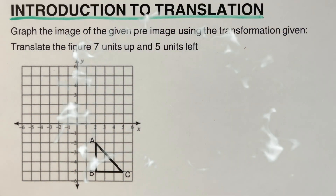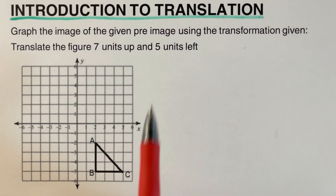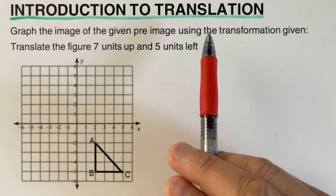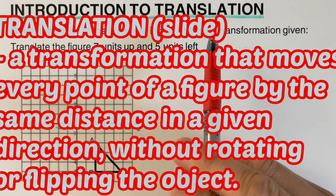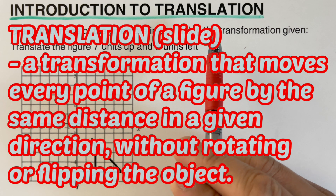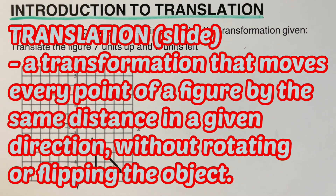Hello everyone! This video is about introduction to translation. The other word for translation is slide or sliding motion. By definition, a translation is a transformation that moves every point of a figure by the same distance in a given direction